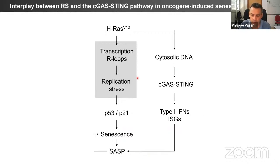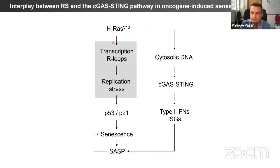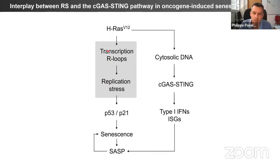This story is about to be submitted for publication. Getting back to the question of how RAS induces senescence — we believe it is by deregulating transcription and replication simultaneously, increasing replication stress through the RNase H-dependent process, eventually leading to senescence. The question now is whether the branch leading to senescence through the inflammatory process is independent or connected.